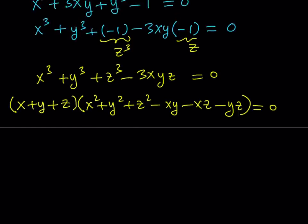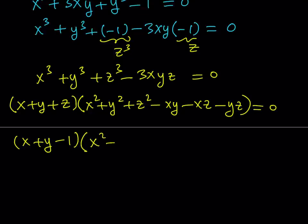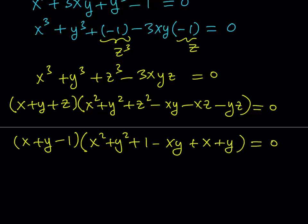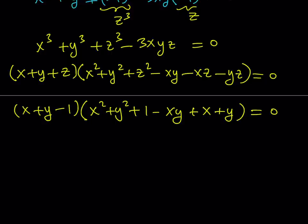Now when I set this equal to 0, remember that z is a temporary variable. I just needed it to make the expression factorable. So now I want to replace z with negative 1 to stay with two variables. Z is negative so it's going to be negative 1 here. Z squared is going to be positive 1. And z is negative 1 so this is going to be a plus x and a plus y equals 0. This expression now has two factors — it's already factored.